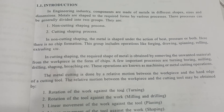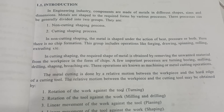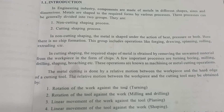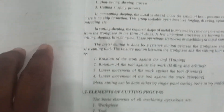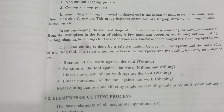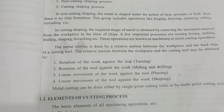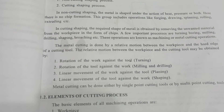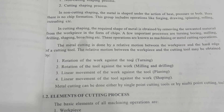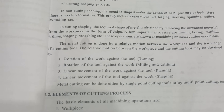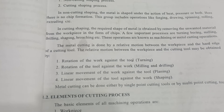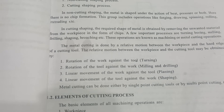Metal cutting is done by relative motion between the workpiece and the hard edge of the cutting tool. This relative motion may be obtained by: rotation of the work against the tool, as seen in turning operation; rotation of the tool against the workpiece, as seen in milling and drilling operations; linear movement of the work against the tool, as in planning operation; and linear movement of the tool against the workpiece, as in shaping operation.